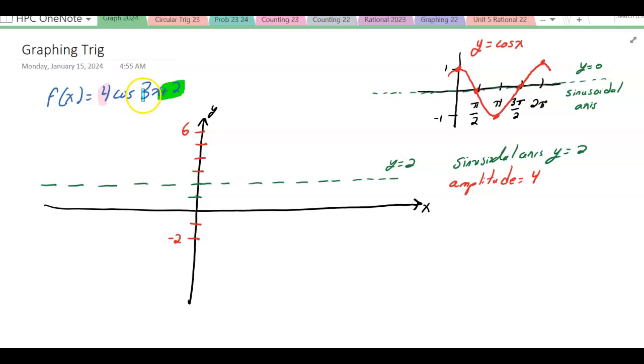Next, I'm going to find the period. The period is found by the coefficient of b, so the period is equal to 2 pi over b. Just for clarity, this function is 4 cosine 3x plus 2. So the b value here is 3, so the period is 2 pi over 3.